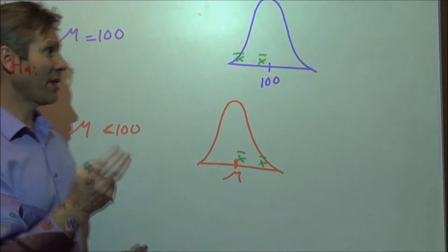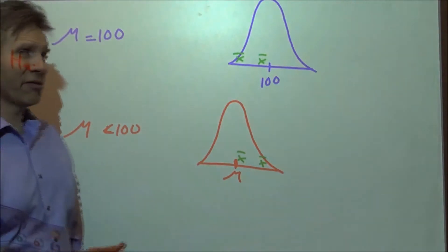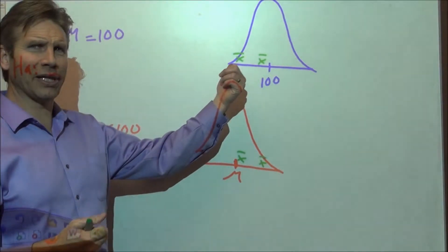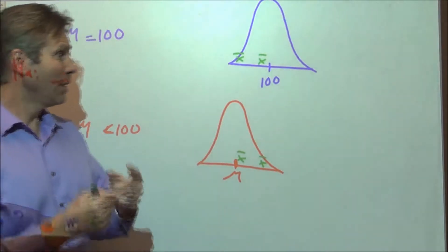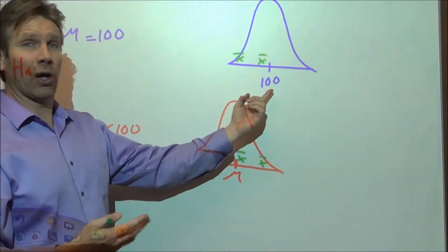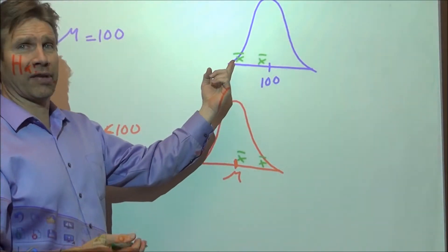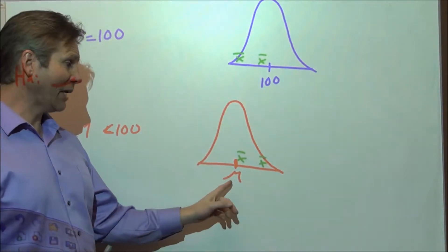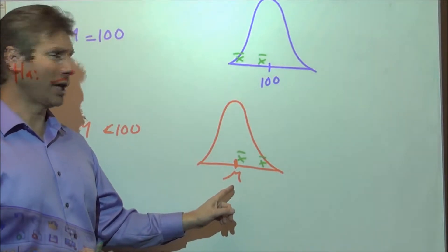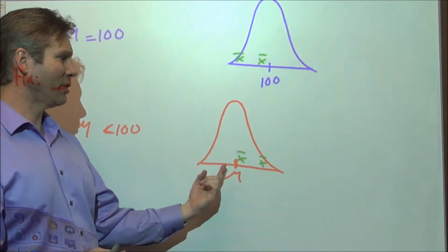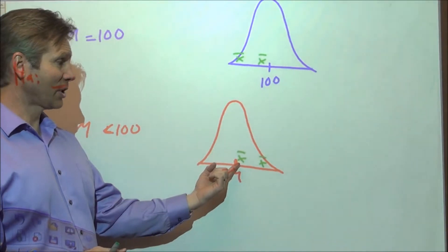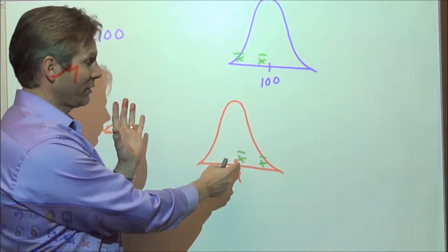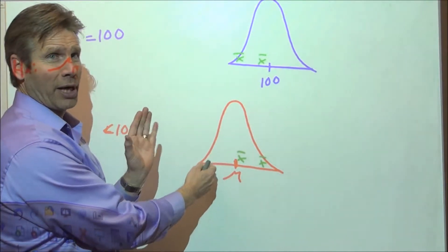So two hypotheses — the null and the alternative — and two potential reasons for why we might get such an extremely low statistic. First reason: the null is true, and this is happening just due to random chance. Second reason: the null is not true, the true mean is less than 100, we're dealing with the sampling distribution down here, and the reason we got such a low result is because that would be a much more typical result coming from a population where the mean is below 100.